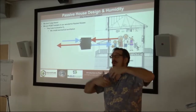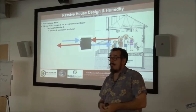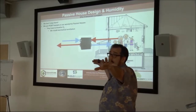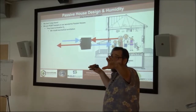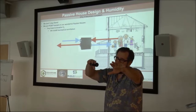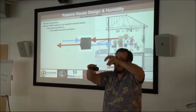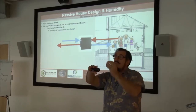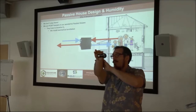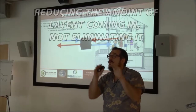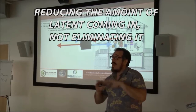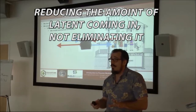On the flip side, in summertime, when you've got hot humid air outside and cooler drier air inside, as the moist incoming air passes through, some of those moisture molecules move into the outgoing stream and leave the building. So you're reducing the amount of latent load coming in — not eliminating it, there's still latent load — but you're reducing it.